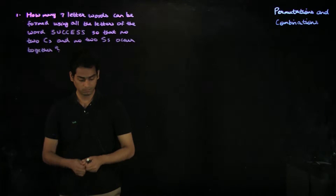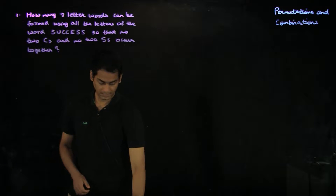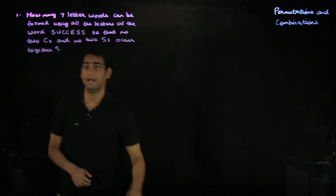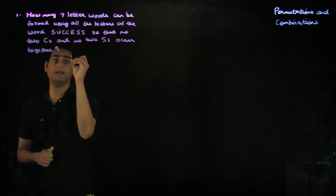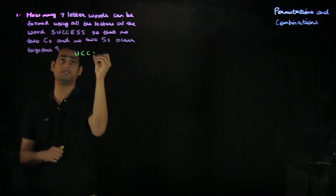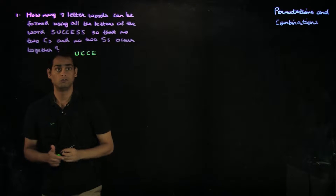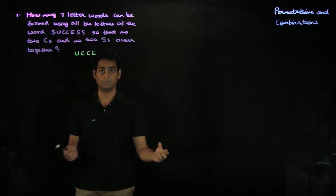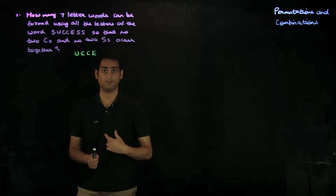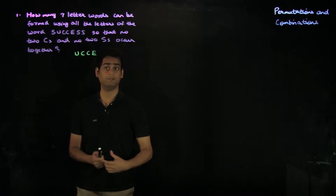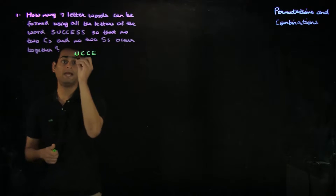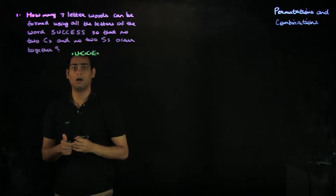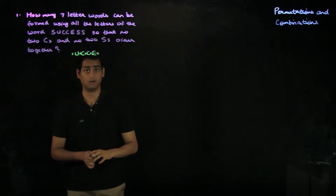A way to approach this would be to first make sure that you have no two S's together and consider the remaining letters in SUCCESS. You have a U, two C's, and an E. So you first want to permute U, C, C, and E, and find the number of subwords that can be formed using U, C, C, and E. Then you want to place the S's between these letters so that no two S's occur together.